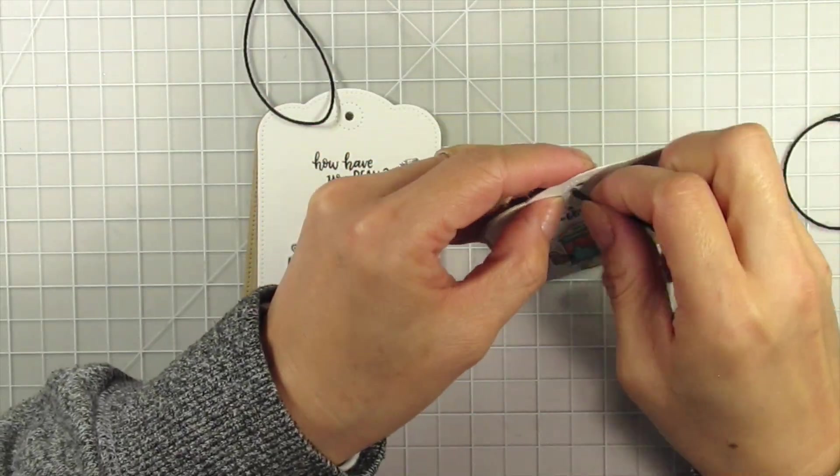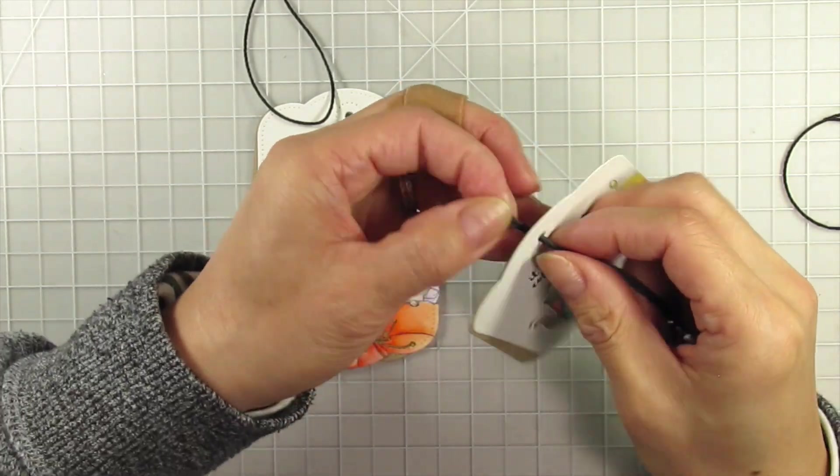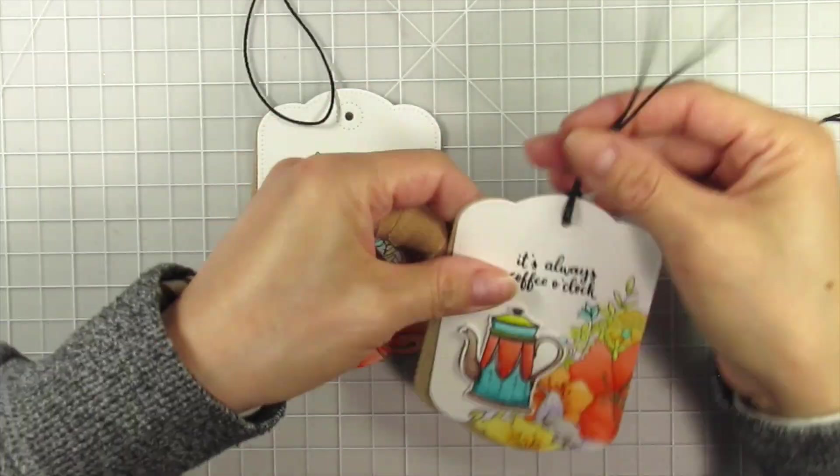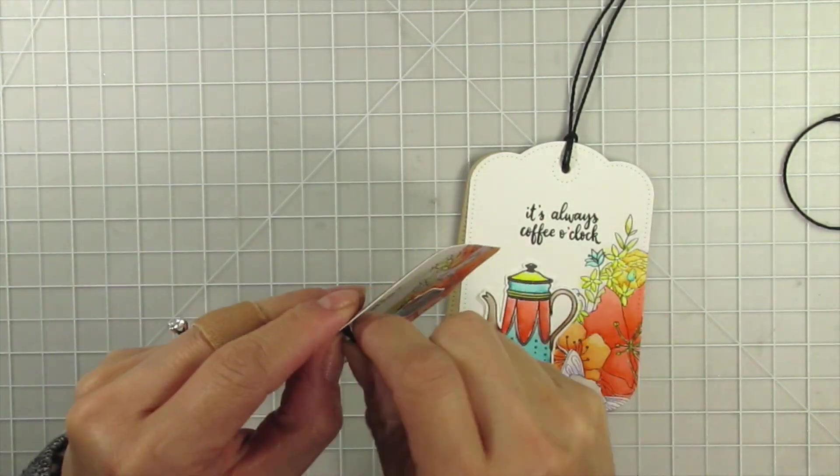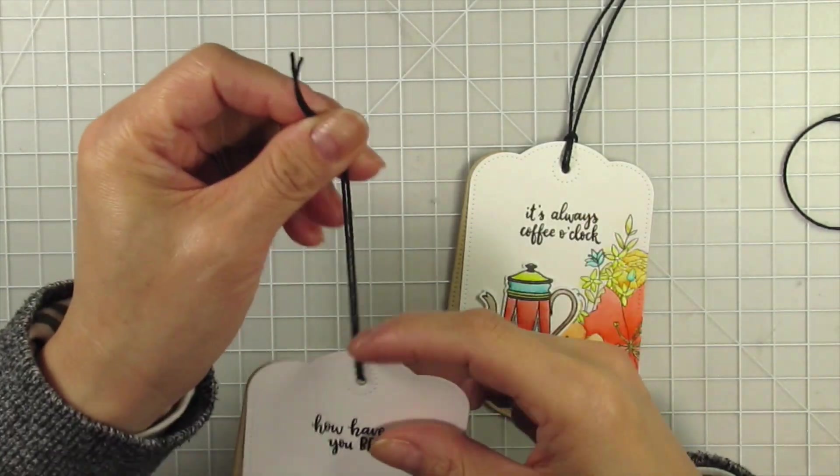This is not true in the case of bookmarks, of course, just tags. I loop the cord and feed it through from the front to back, but if you'd rather not see the loop at the top of the tag, you can do it from the other side.